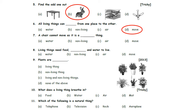Next one: A chair cannot move as it is a _____ thing. Option A: Water. Option B: Non-living. Option C: Air. Option D: Move. A chair cannot move as it is a non-living thing.